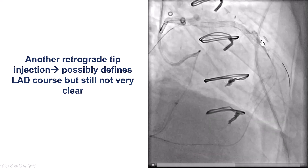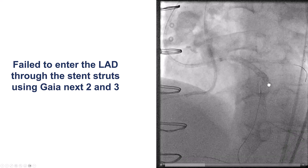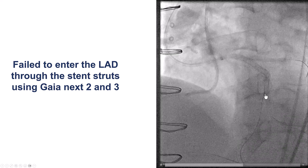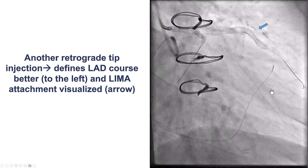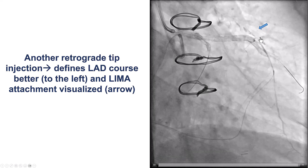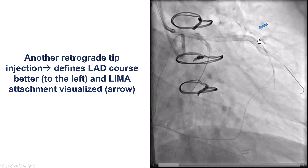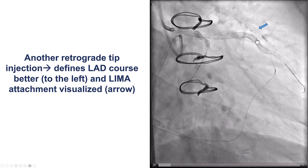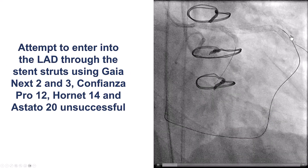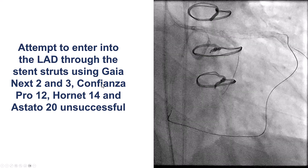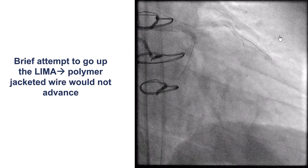We tried to potentially find a way to puncture retrogradely into the proximal true lumen. We used a Gaia Next-2 and a Gaia Next-3, but the guidewires were deflecting and moving in the sub-stent area behind the previously placed stents. We did retrograde injections to better understand the entry point and saw the touchdown of the previously placed LIMA graft and the vessel extending slightly more proximal. We then used the Confianza Pro-12, Hornet 14, and Stato 20 — fairly stiff guidewires — but were unable to puncture through.